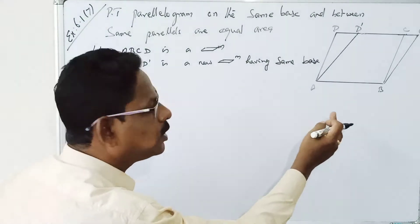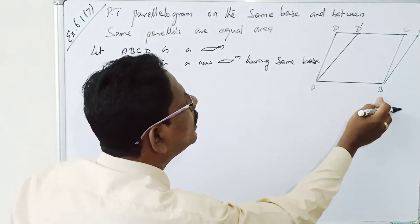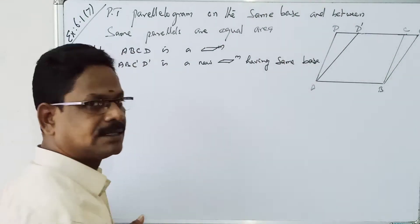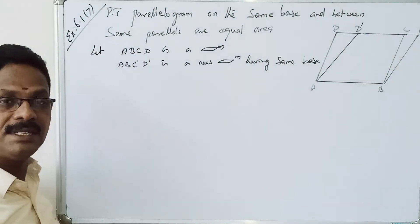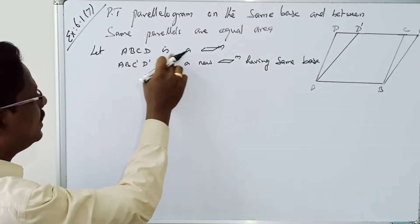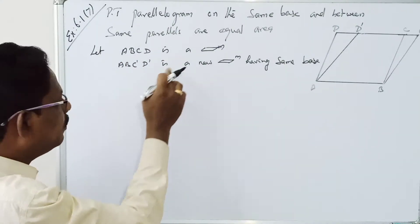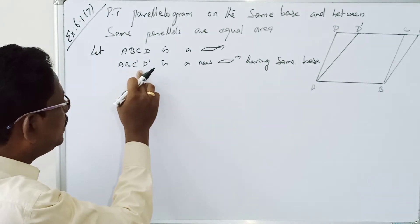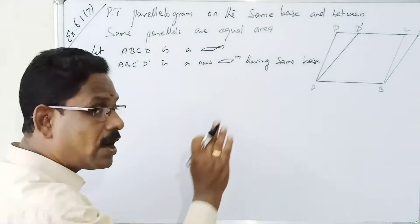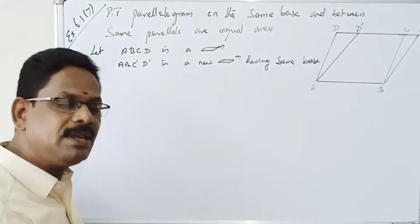So the new parallelogram is A, B, C, D'. Parallelogram A, B, C, D is the first parallelogram, and A, B, C, D' is the new parallelogram — both on the same base.